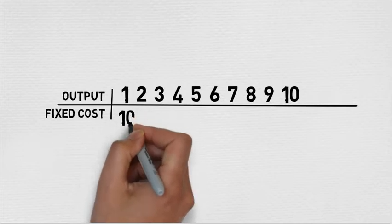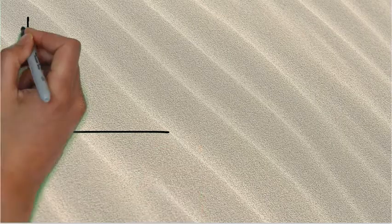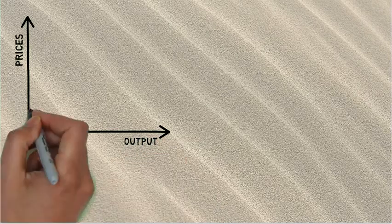We saw earlier that Fixed Costs is fixed in nature. This means, no matter how much the amount of output I produced, my cost will remain the same. Hence, my Fixed Costs curve is a straight line.